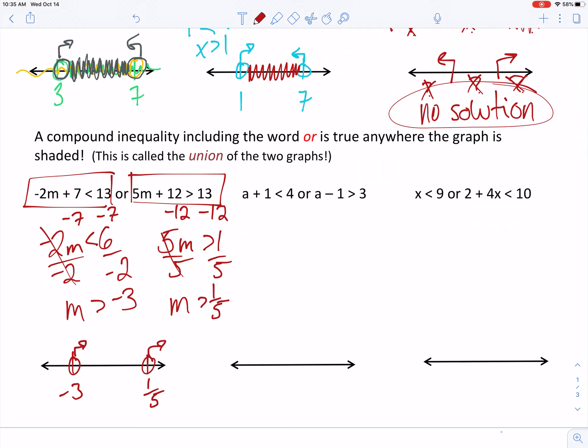All right, so this time you get to shade anywhere that one of them is true. This is going to be called the union of the graphs. So, as I look over here, do they both work? Or do either one of them work is what I should have asked. Do either one of them work? No. What about in the middle? Yes, the negative 3 is working, so I can go ahead and shade it. And actually, since it's an or, I'm just going to keep on shading for infinity, right? Okay, maybe I won't. But I am going to keep shading towards the end of the graph just to double check. Does the one-fifth work? Or does the right side work? It sure does. So, there you go. That would be your answer.